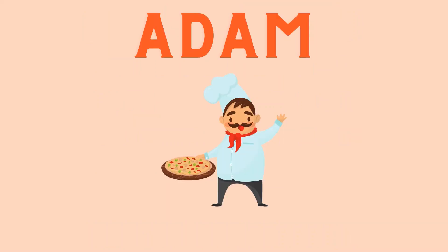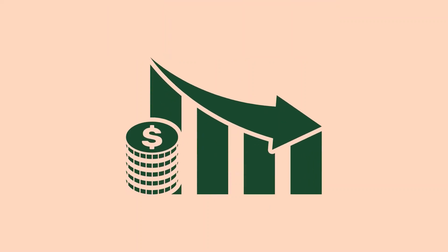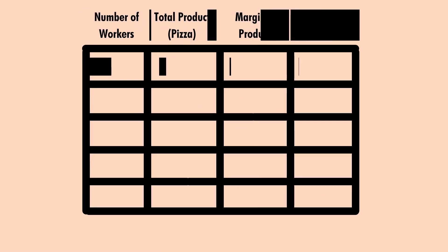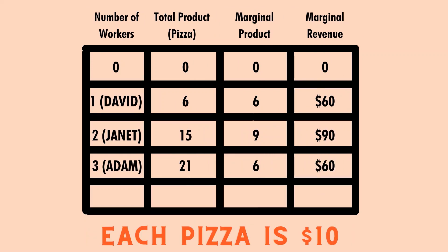Keynes decides to hire a third worker, Adam, with the hopes of earning even more revenue. However, little does he know that the law of diminishing marginal returns is going to kick in with Adam's addition. With the third worker, the total product increases to twenty-one. Adam's marginal product is twenty-one minus fifteen, which equals six. His marginal revenue is six times ten dollars, giving us sixty dollars.